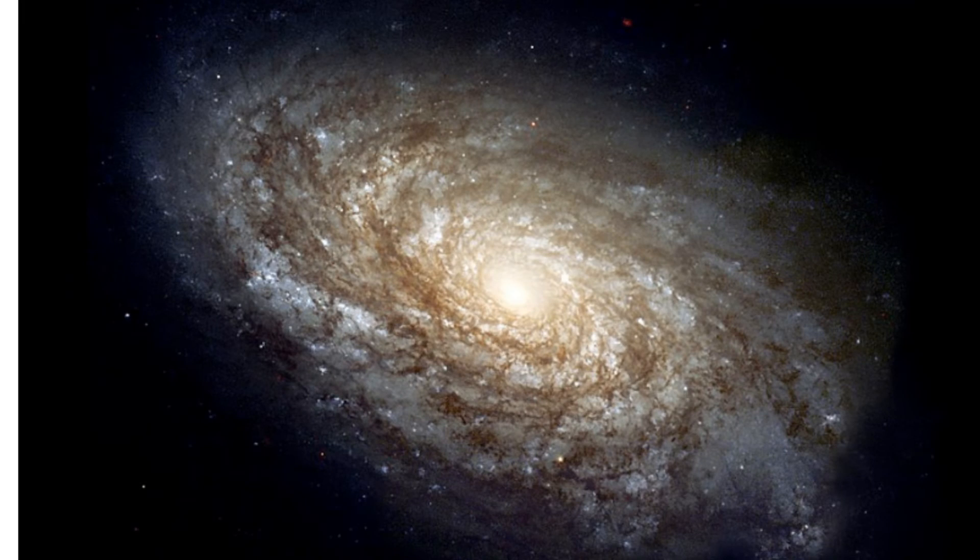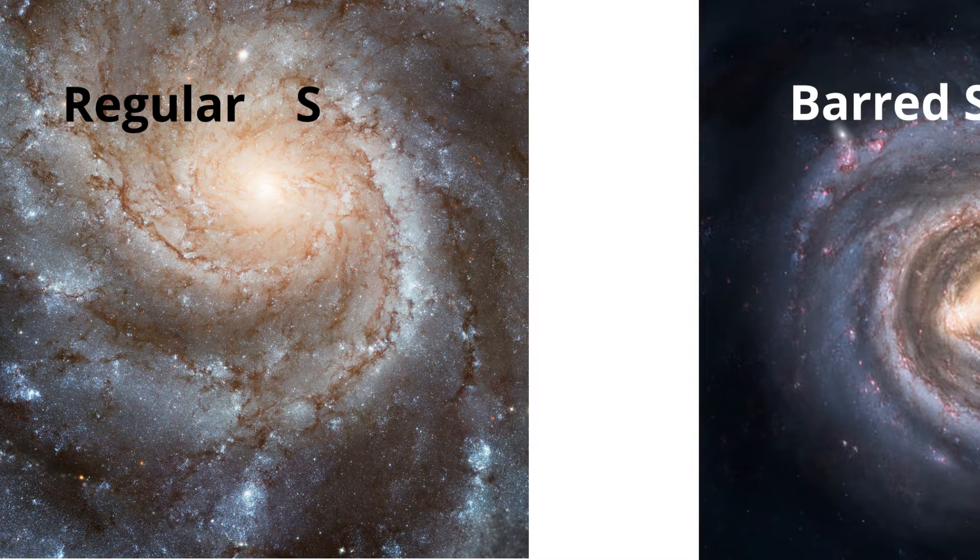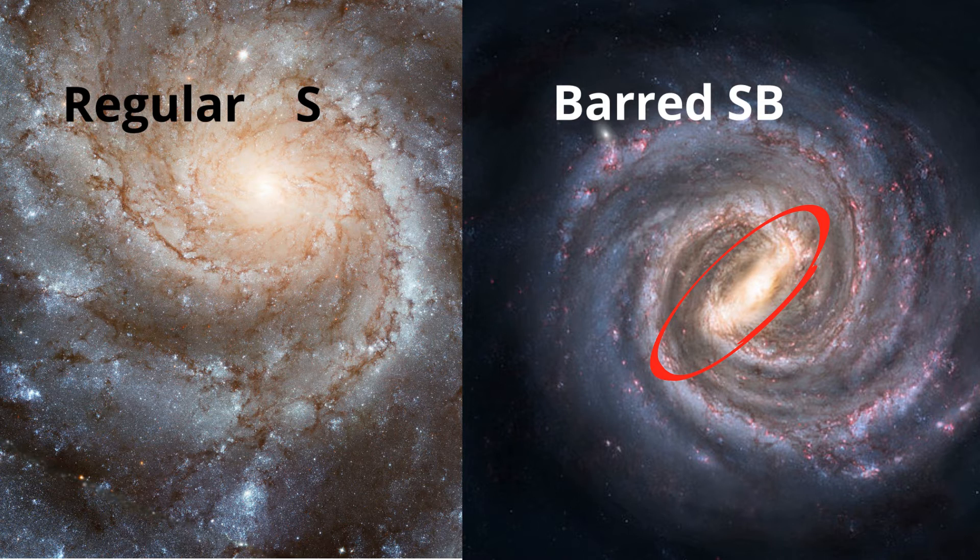Spiral galaxies are also subdivided into two main types: regular, which are classified with an S, and barred spirals, which are classified with an SB. A barred spiral galaxy has a bar shape in the center. Our Milky Way is an example of a barred spiral shaped galaxy.